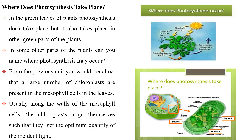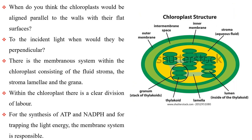Where does photosynthesis take place? In the green leaves of plants, photosynthesis does take place, but it also takes place in other green parts of the plants. Can you name other parts where photosynthesis may occur? A large number of chloroplasts are present in the mesophyll cells in the leaves. Usually, chloroplasts align themselves along the walls of the mesophyll cells such that they get the optimum quantity of incident light. When do you think the chloroplasts would be aligned parallel to the walls with their flat surfaces, and when would they be perpendicular to the incident light?